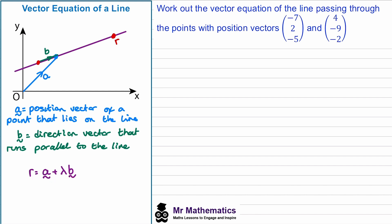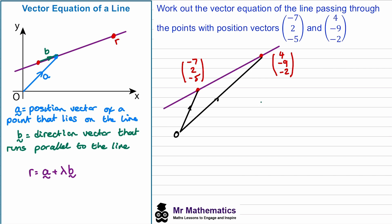We're going to use this equation to find the vector equation of a line passing through two points with given position vectors. If I sketch this as a diagram, we've got the two points on the line as position vectors originating from the origin. So the equation will be r = a + λb. For a I could use either of these two points since they both lie on the line — I'm going to choose this one. I'll label the two points as point P and point Q, so a direction vector will be the vector from P to Q.